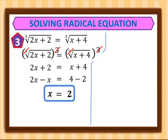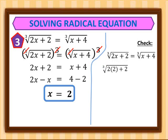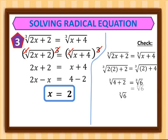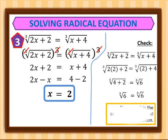We check by substituting 2 into the original equation: cube root of 2 times 2 plus 2 equals cube root of 2 plus 4. That gives us cube root of 4 plus 2, which is cube root of 6, equal to cube root of 6. Since this is true, x equals 2 is the solution.